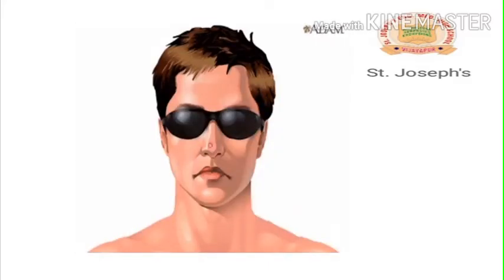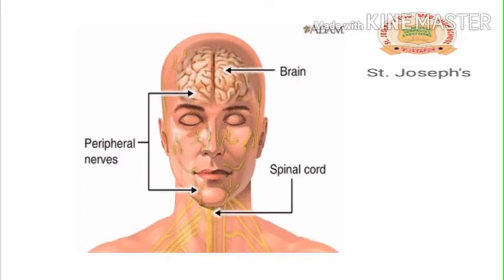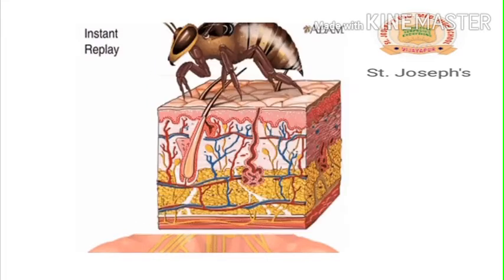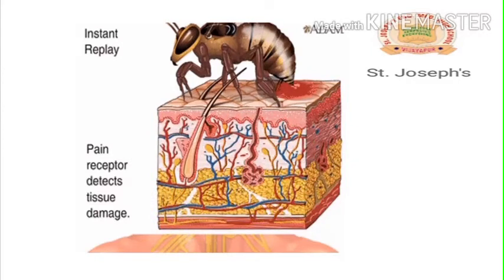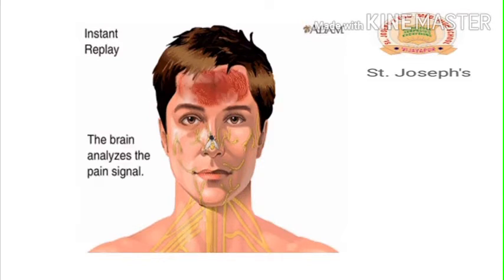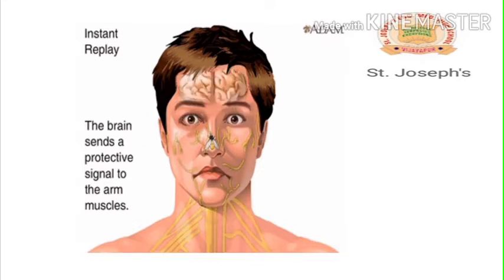Every thought you have, every emotion you feel, and every action you take is a reflection of the nervous system. At the core of the nervous system are the brain and the spinal cord, known as the central nervous system. The most complex part is the brain, which constantly receives information from the body, processes it, and sends out instructions telling the body what to do.